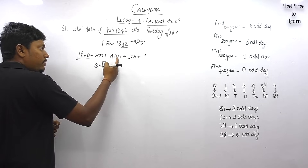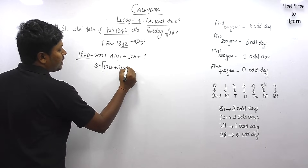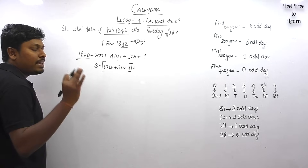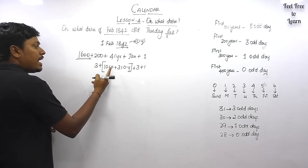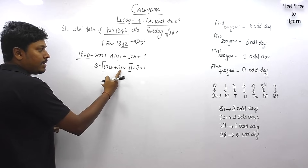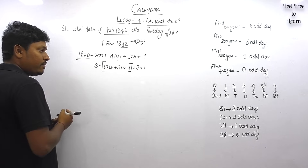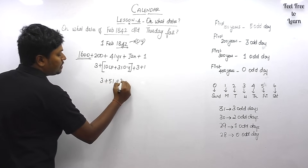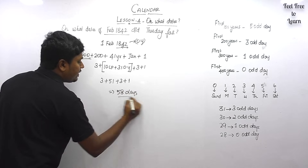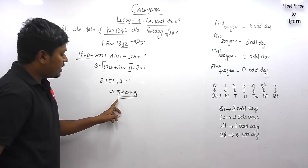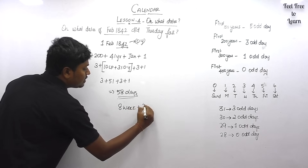For 1600 years: zero odd days. For the first 200 years: three odd days. For 41 years, divide by four — we get 10 leap years and 31 ordinary years. January has 31 days — three odd days, plus 1 for 1st February. Each leap year gives two odd days: 10 × 2 = 20. Each ordinary year gives one: 31 × 1 = 31. Total: 3 + 20 + 31 + 3 + 1 = 58 days. Divide by 7: 8 × 7 = 56, remainder is 2 odd days.